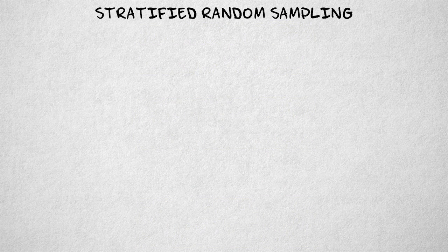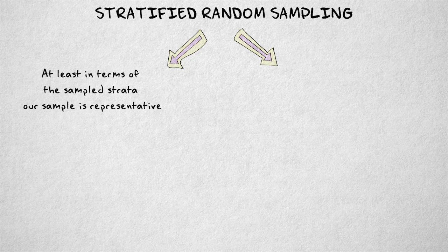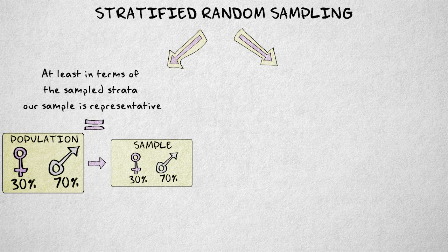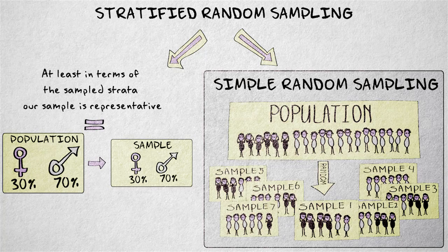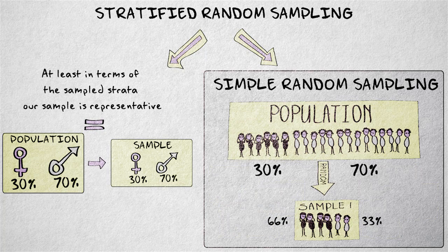Stratified random sampling is useful for two reasons. First, it allows us to ensure that, at least in terms of the sampled strata, our sample is representative. This means subpopulations are represented in the sample in exactly the same proportion as they appear in the population. With simple random sampling, we can expect the sample to be representative in the long run, but due to chance, in any particular sample, strata might be over or underrepresented.